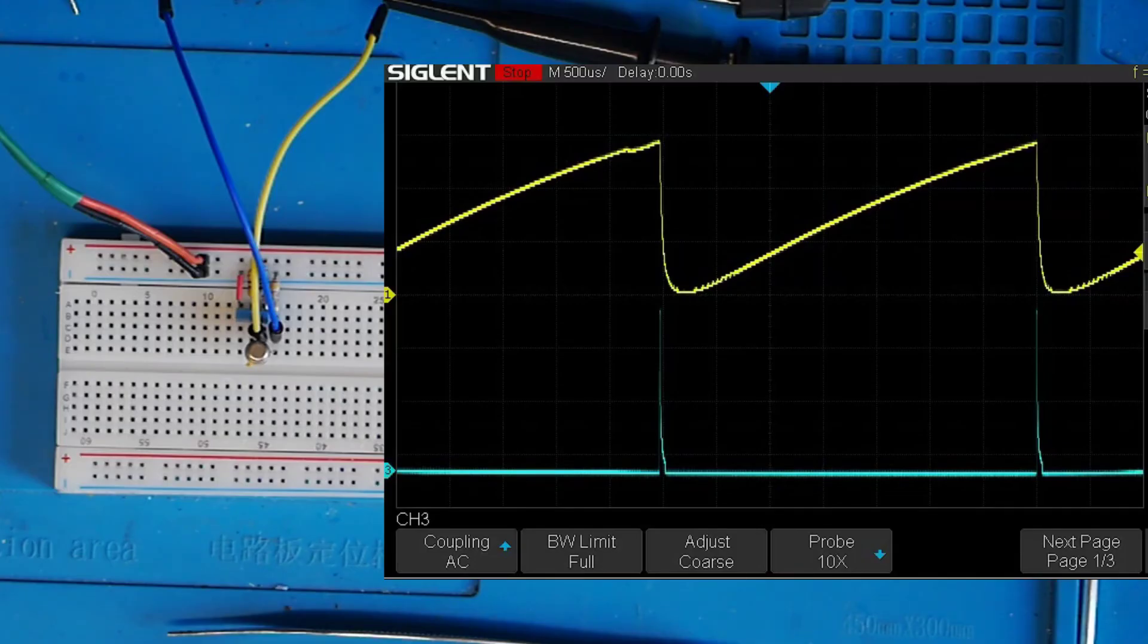This rather handy ramp waveform that you get or sawtooth waveform that you might want to call it from the unijunction transistor has a number of applications. They're not particularly popular transistors these days, but of course one of the applications would be in a time-based circuit for moving the dot across the screen on the oscilloscope something like that, and it needs to return very rapidly so you could certainly use it for that.